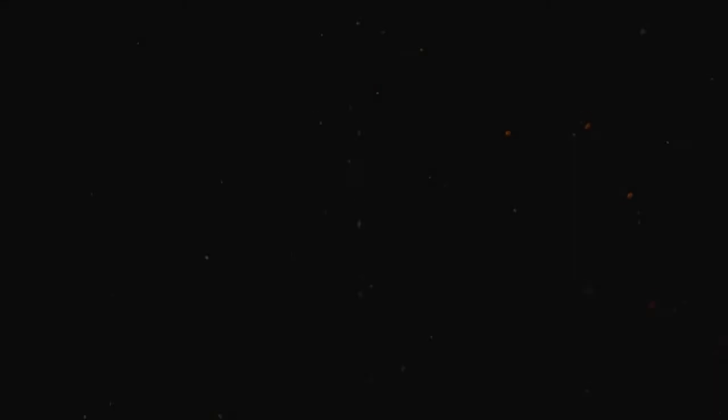This supernova I just described now is known as a Type 2 supernova. A Type 1 supernova usually involves two white dwarf stars orbiting each other in a binary system with the gas from one star triggering a supernova event in the other. But we'll leave that out for now to avoid too much confusion.